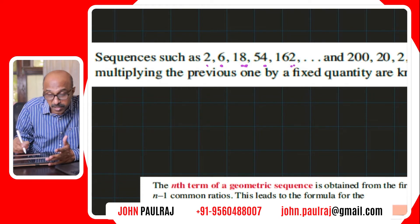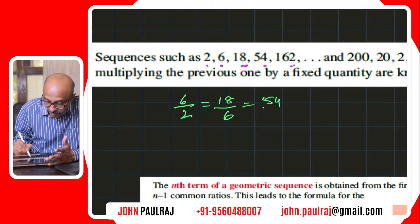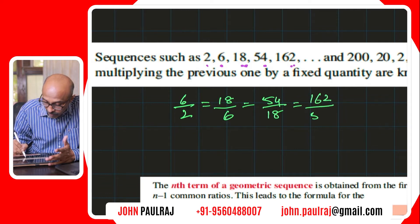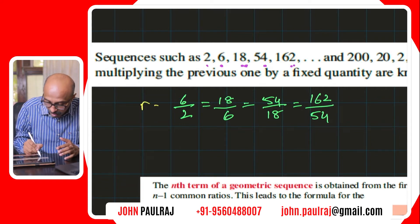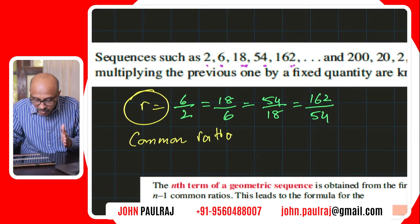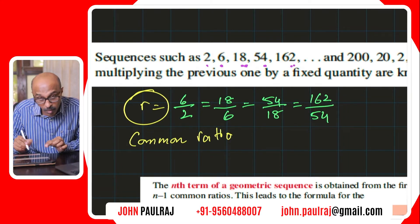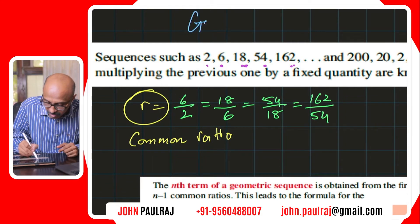For this particular sequence we can say that 6 divided by 2 is the same as 18 divided by 6, which is the same as 54 divided by 18, and that will be the same as 162 over 54. The ratio of each successive term is the same, and we denote that ratio as r — we call that the common ratio. Whenever a sequence of terms can be generated by a constant multiple, or if they have this common ratio between successive terms, we call such sequences geometric sequences.